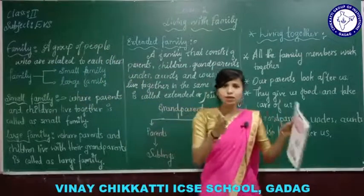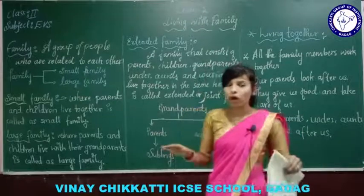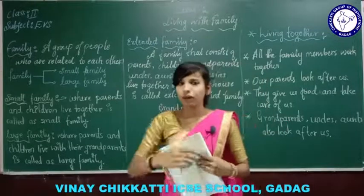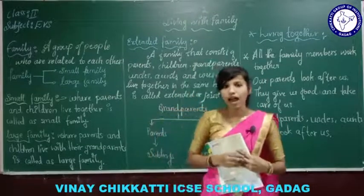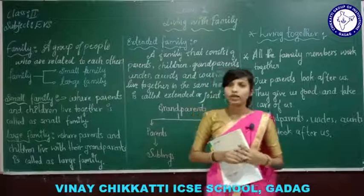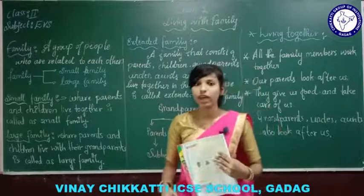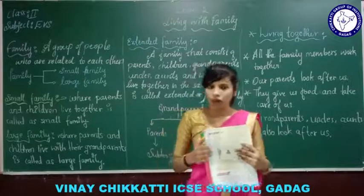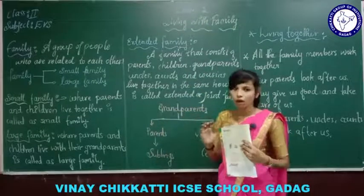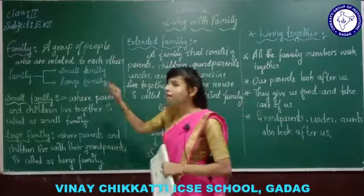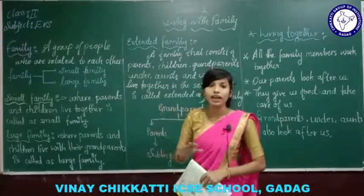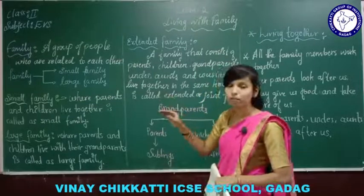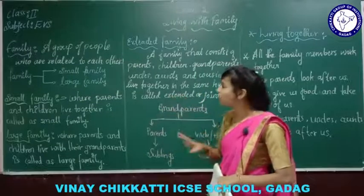Suppose one house is there. If we are all living like parents, children, cousins, uncles, aunts, and grandparents together, then it is called a home. Family means the people who are related to each other — not friends. Family members are those who are related to us.